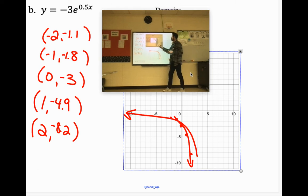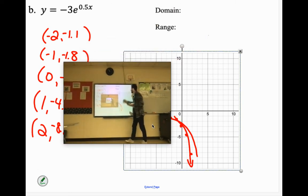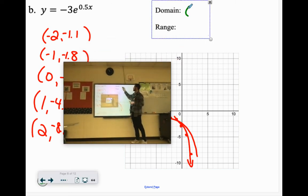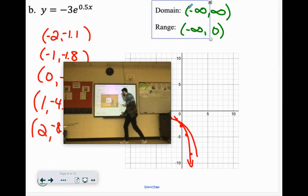Domain, again, all real numbers. The range has an asymptote at 0. But it goes downward towards negative infinity.